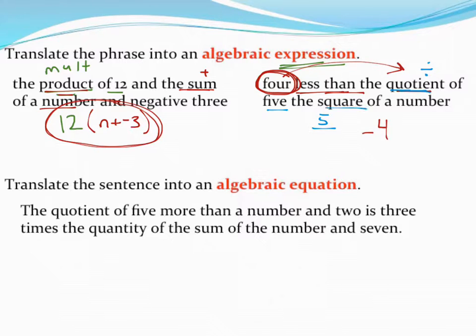So 5 and the square of a number. Again, I don't know what the number is, so I'll use x. Squaring something means to raise it to the second power. So there's the quotient part, the quotient of 5 and the square of a number. And if I want four less than that, then that's where that minus 4 goes.